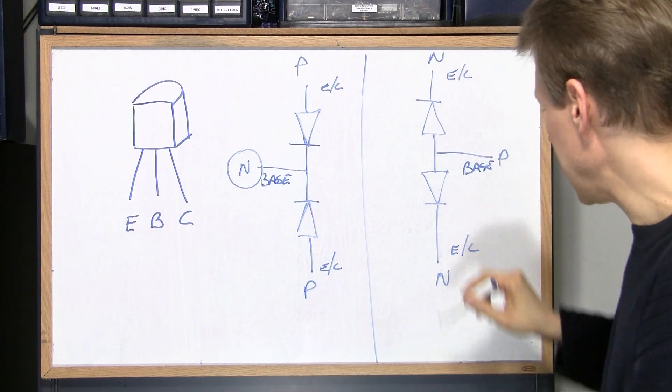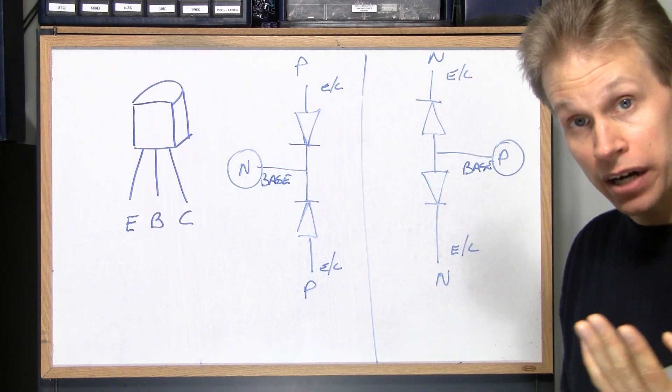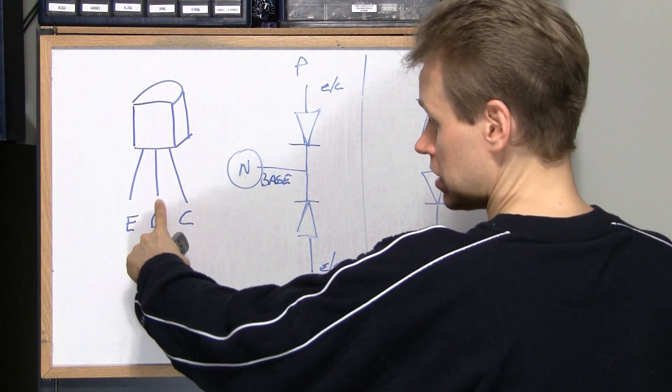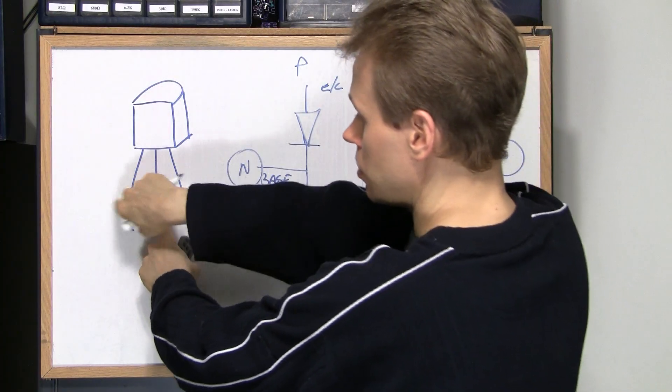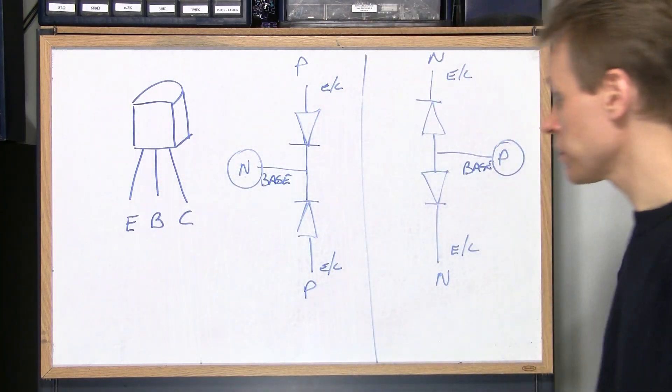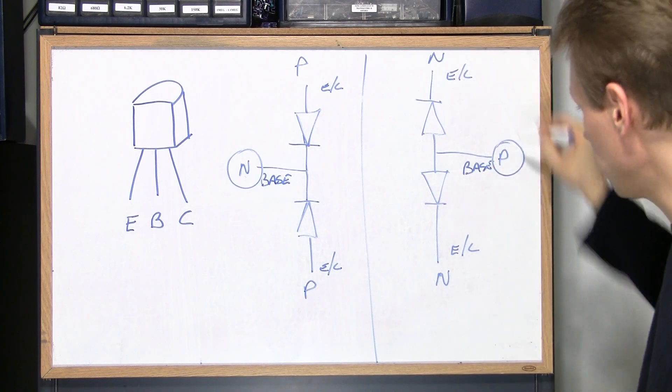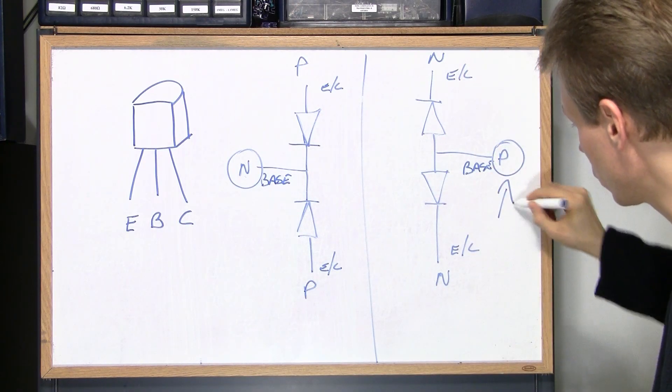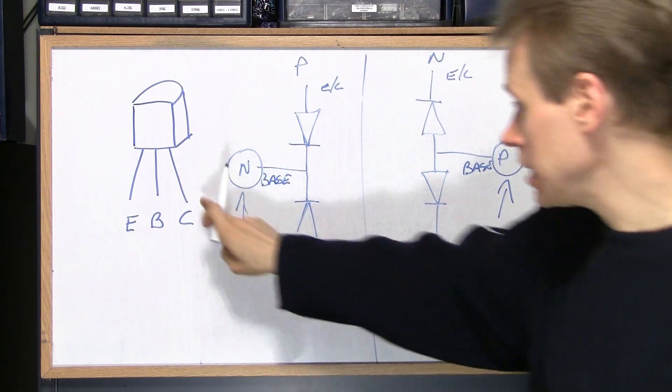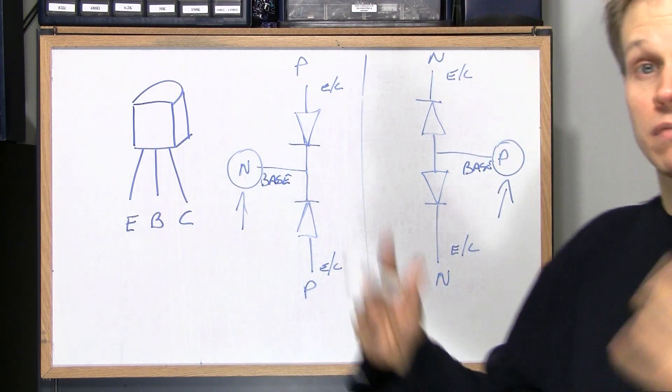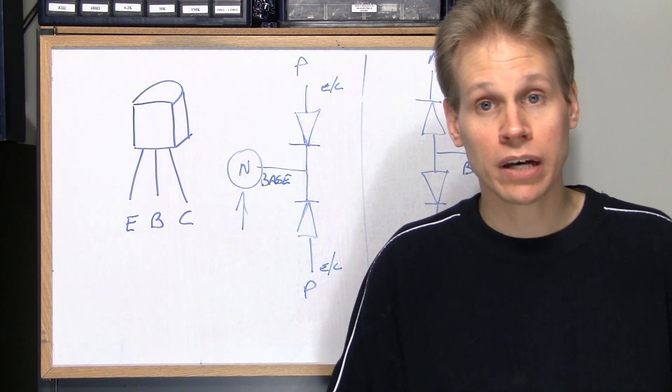And it's the same thing with an NPN. You take the positive lead of your diode checker, touch it to the base, take the negative, touch it to the collector, it reads as a diode, and then touch the emitter and it reads as another diode. So if you draw this out, you can see that it's pretty simple. NPN, this is your lead from your diode checker. And then you use the other lead to either touch the collector or the base. And that's how simple it is to check your transistors with just a normal diode checker.